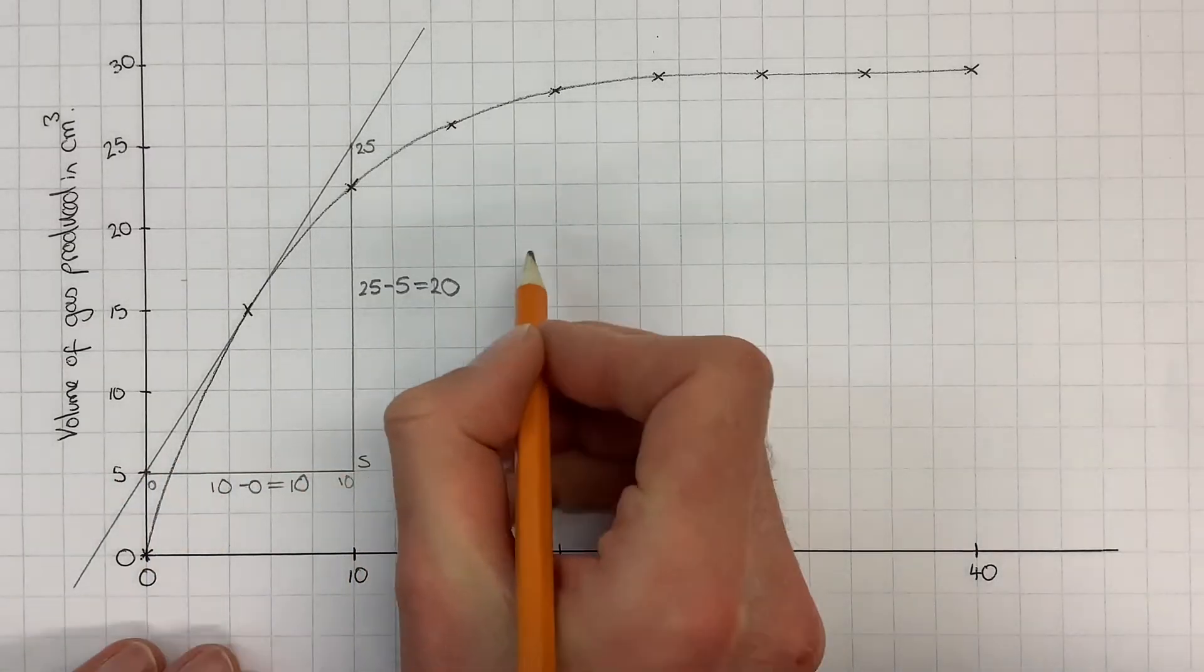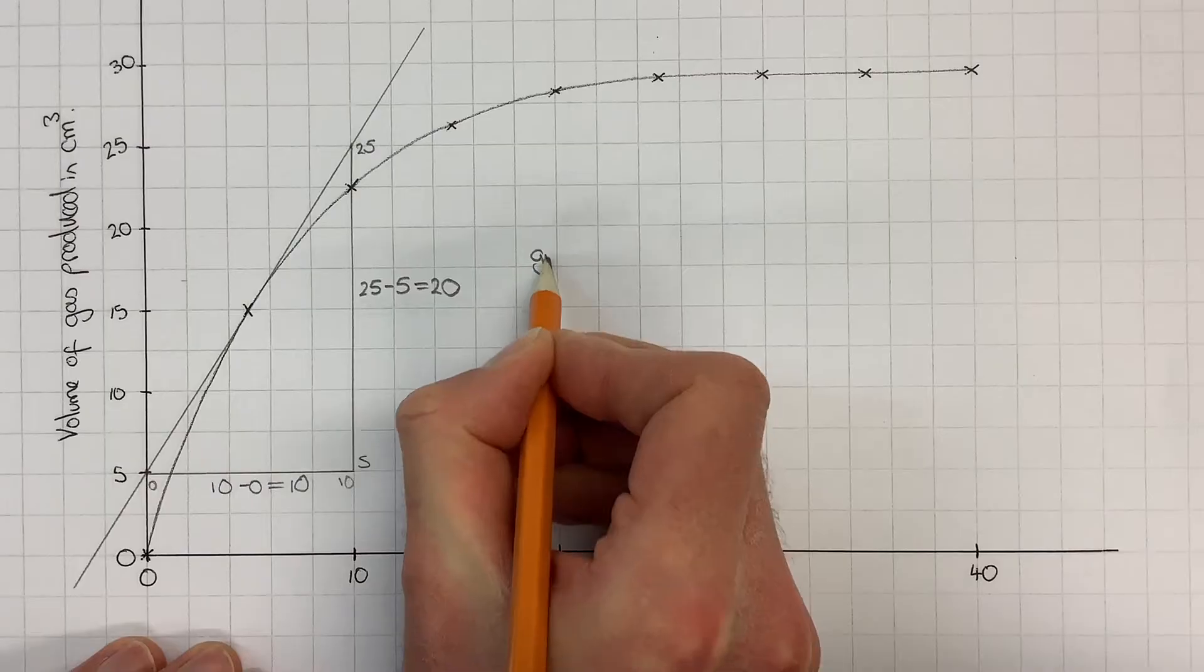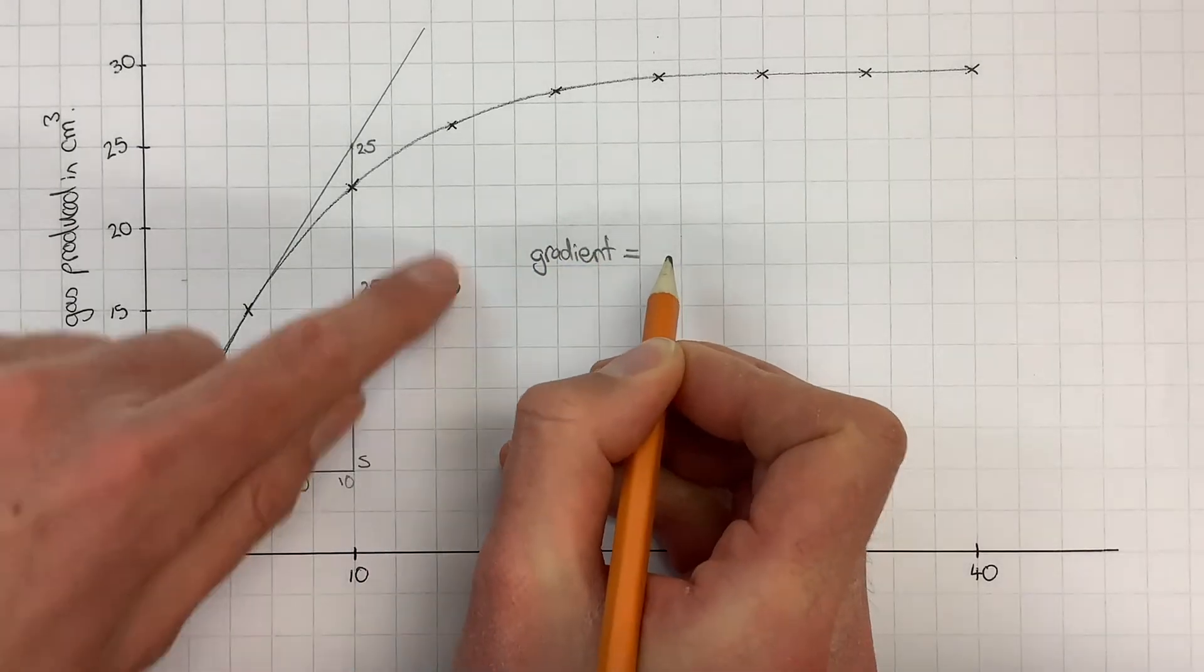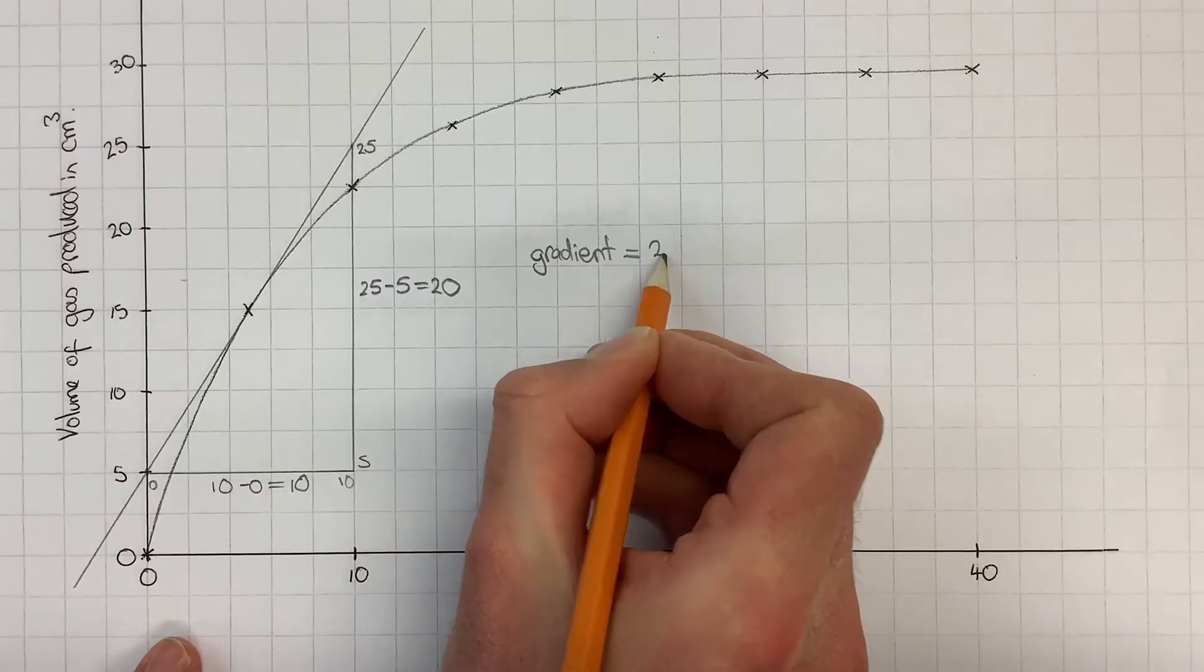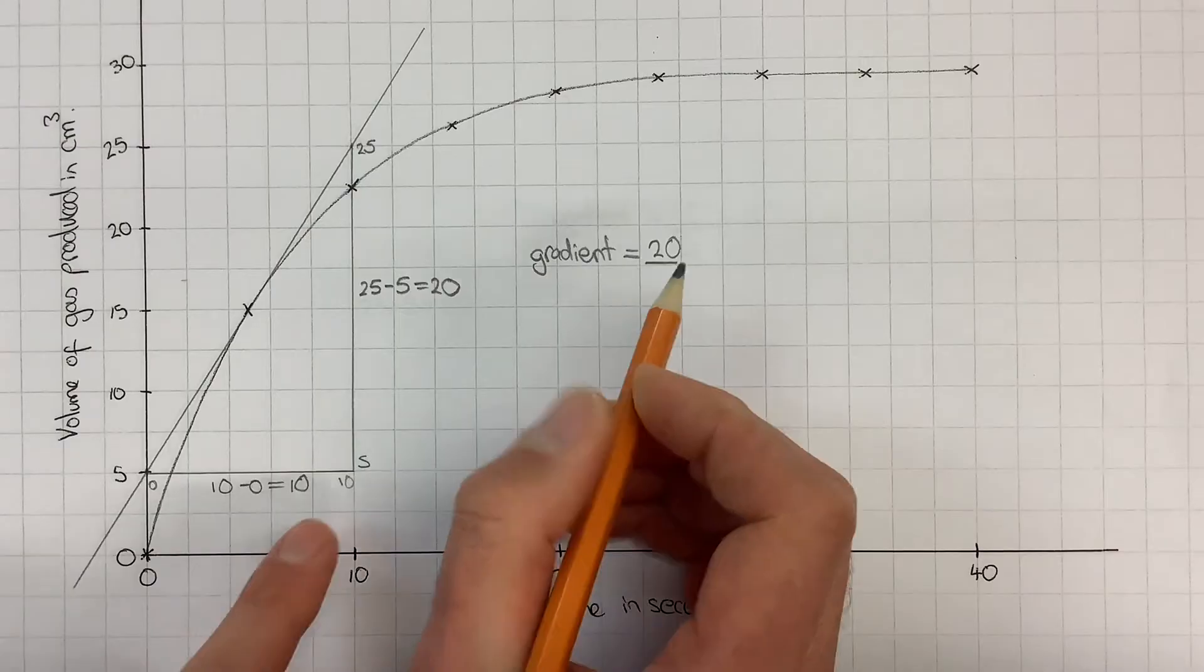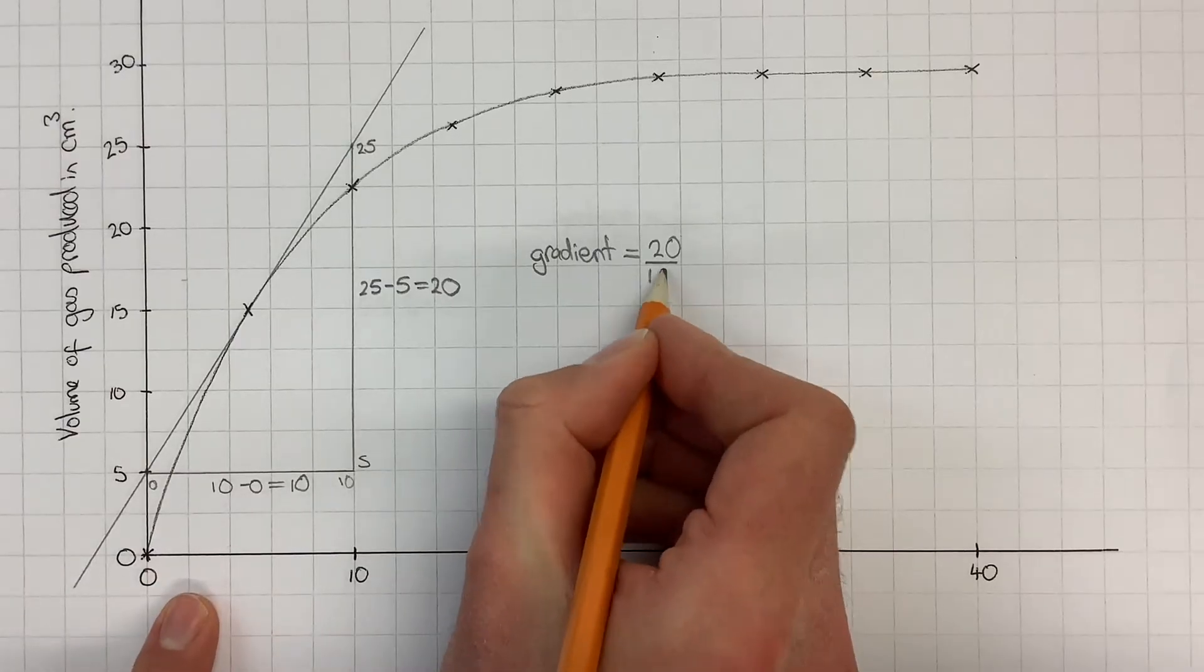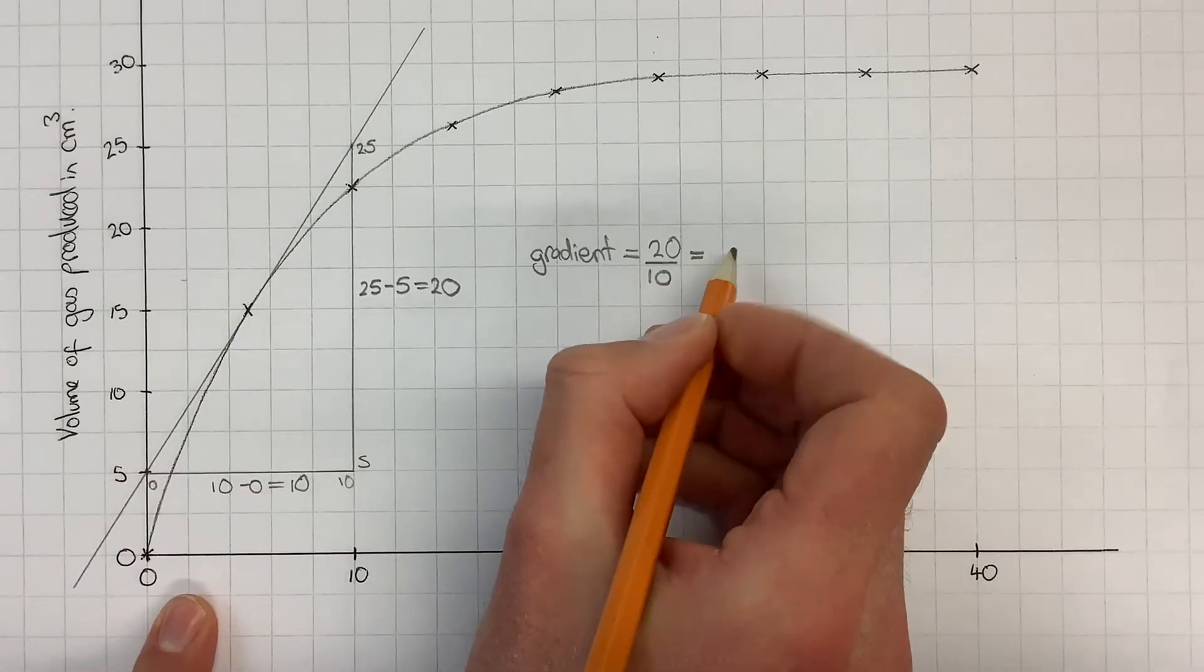The next thing to do is to calculate my gradient. The gradient I calculate by doing the change in the vertical, which is my 20, divided by the horizontal, which is 10, and then I can work that out on a calculator.